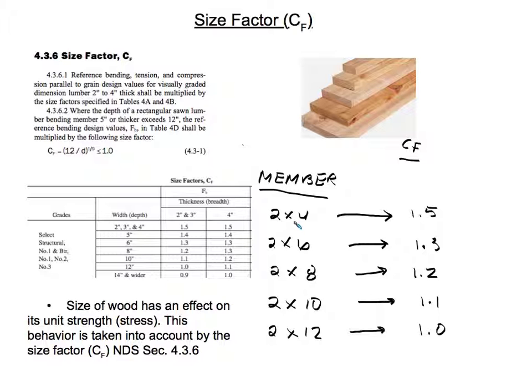So just for some examples here, I have some typical wood members and I'm just going to quickly show you how to use it. It's very simple. Let's say for a 2x4, the depth of the 2x4 is 4, so we go here to 4, and then the thickness is 2 inches. So we have a 1.5 factor for CF.